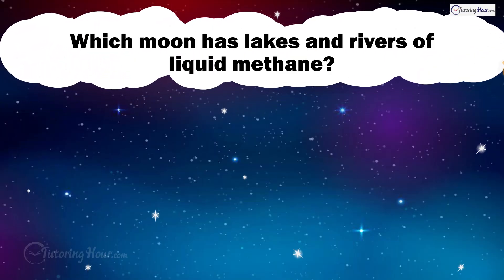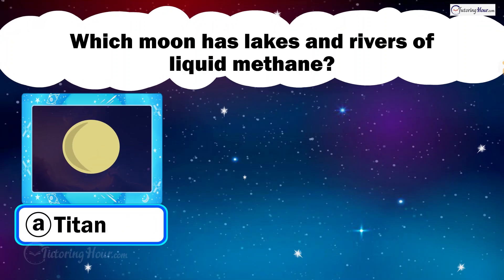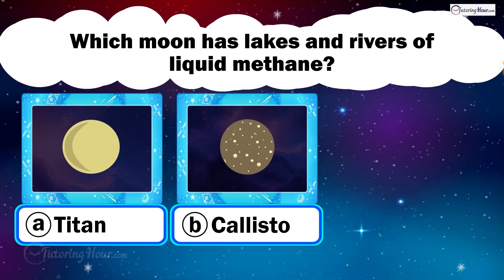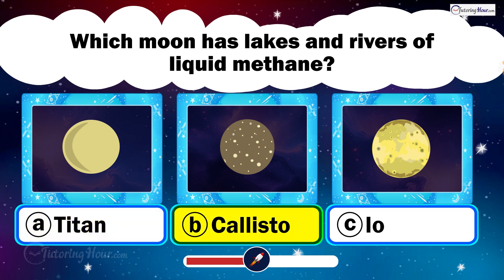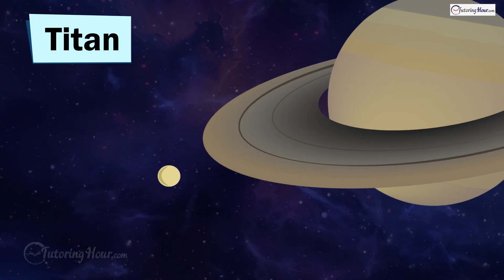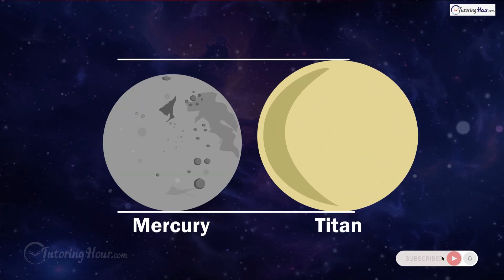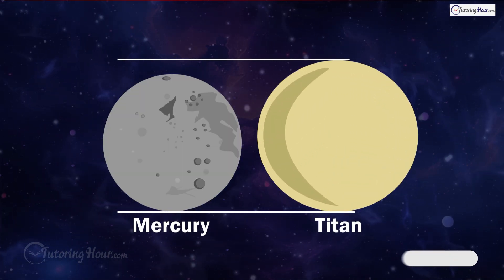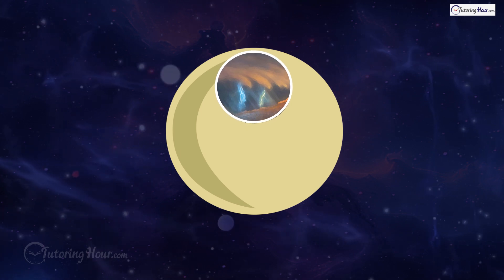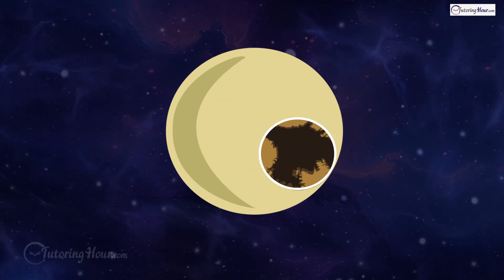Which moon has lakes and rivers of liquid methane? Is it A. Titan, B. Callisto, or C. Io? The correct answer is Titan. Titan, Saturn's largest moon, is larger than Mercury and the second largest moon in our solar system. Titan has clouds, rain, rivers, lakes, and seas of liquid hydrocarbons like methane and ethane.